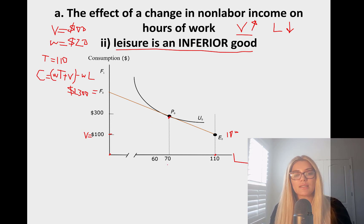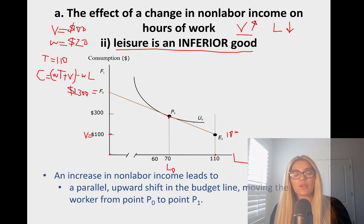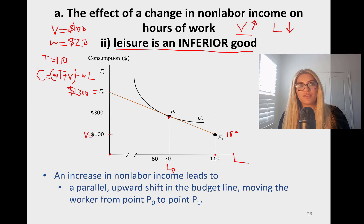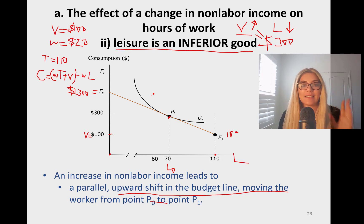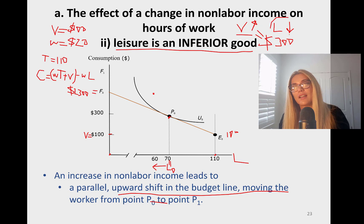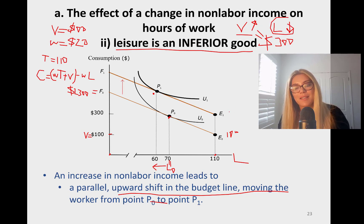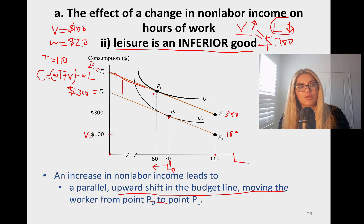Initially, let's say we're at point P0 where this person has 70 hours of leisure. Non-labor income then goes up to $300. The increase in non-labor income leads to a parallel upward shift in the budget line, moving the worker from P0. The new budget line runs from F1 to E1, where F1 is $2,500.